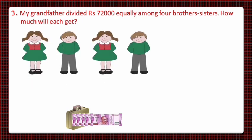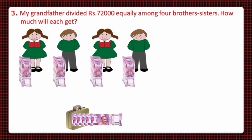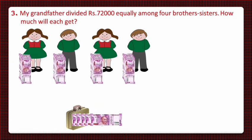In 72,000, ten thousand rupees comes seven times. First, grandfather will give 10,000 rupees to each grandchild by giving five notes of rupees 2,000 to each. As there are four children, four into 10,000 equals 40,000 rupees distributed. After subtracting, 72,000 minus 40,000 leaves the grandfather with 32,000 rupees.